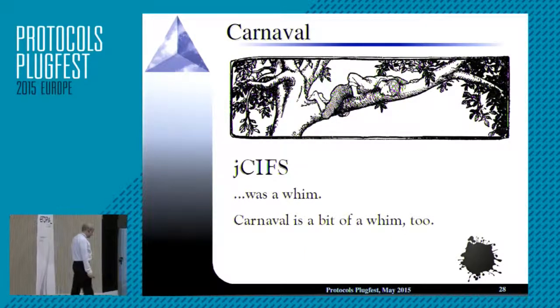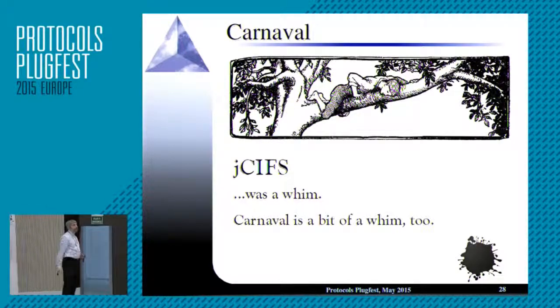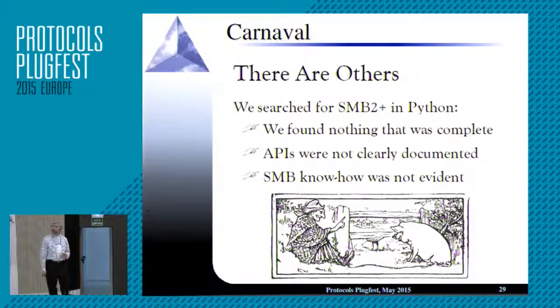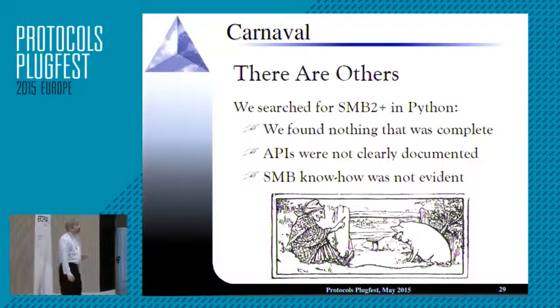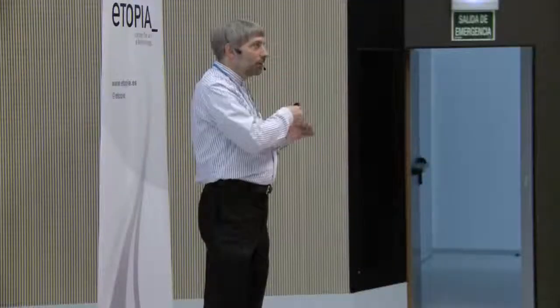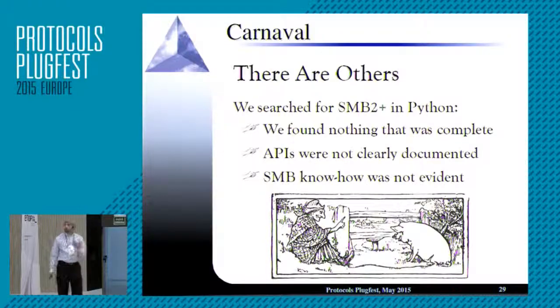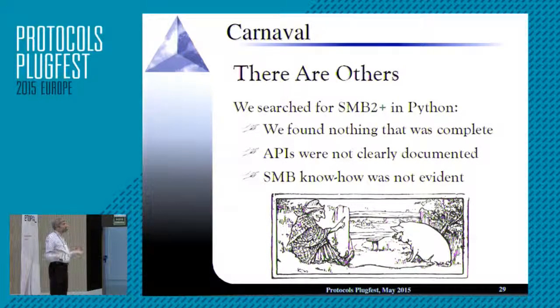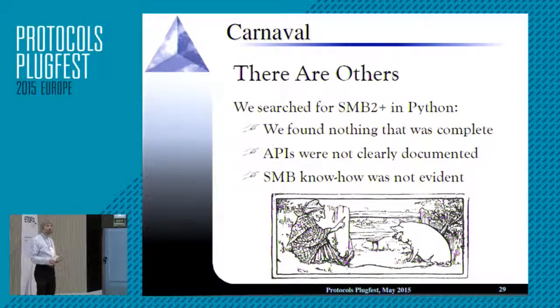JSIFS was a whim, and Carnival is a bit of a whim too. I do have a little help — Mr. Rivera has done some coding, and a friend in India has done a little bit of work too. We did search for SMB2+ implementations in Python. By the way, SMB3 is just a dialect of SMB2 — unlike the difference between SMB1 and SMB2 which is a different protocol, SMB2 to SMB3 is about features. I've been writing SMB2+ as my generic term. We searched for other SMB2+ implementations in Python and found nothing — nothing complete, nothing consistent, nothing that really showed an understanding of what SMB did. APIs were not clearly documented.